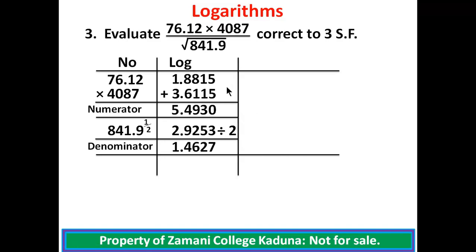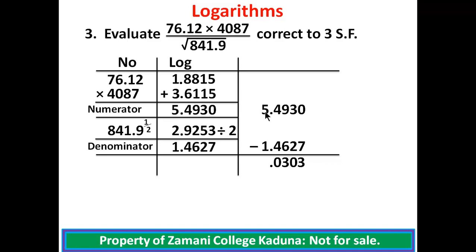Bringing the numerator and denominator in line for subtraction: borrow 1 from 3 to make 10; 10 minus 7 gives 3; remaining 2, 2 minus 2 gives 0; 9 minus 6 gives 3; 4 minus 4 gives 0. Place the decimal point. 5 minus 1 gives 4. We now go ahead to find the antilog of 4.0303.